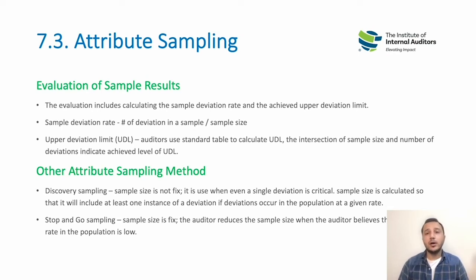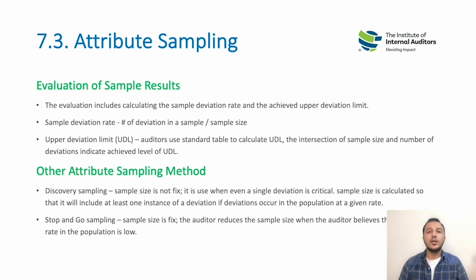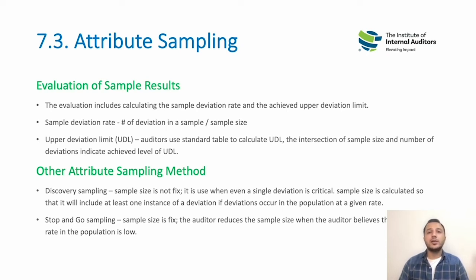If a transaction was made with a country, institution, or client on the U.S. ban list or embargo list, it could lead to major legal complications. In such cases, we use discovery sampling — the sample size is not fixed, but we look at the data until we find a deviation and then assess whether it is material or not.